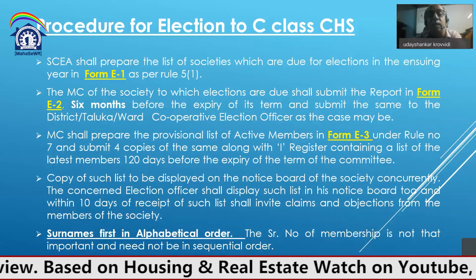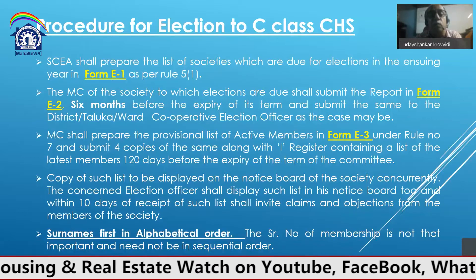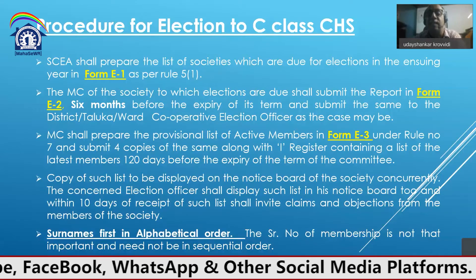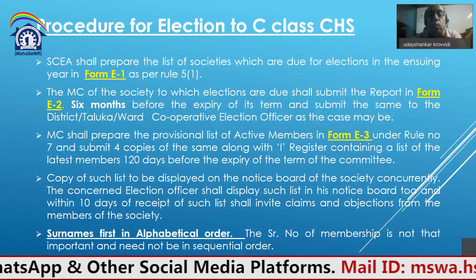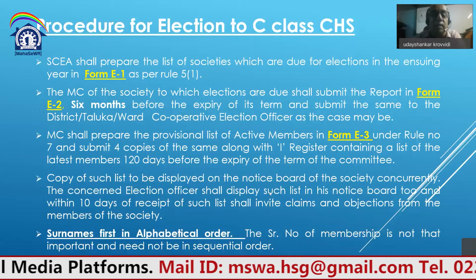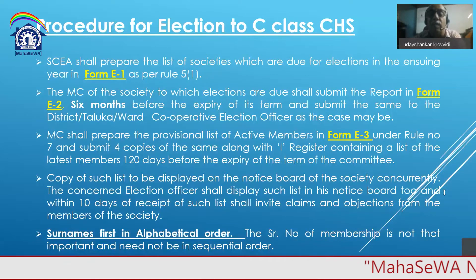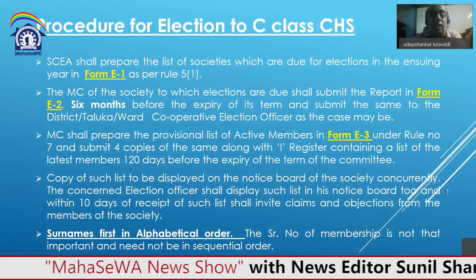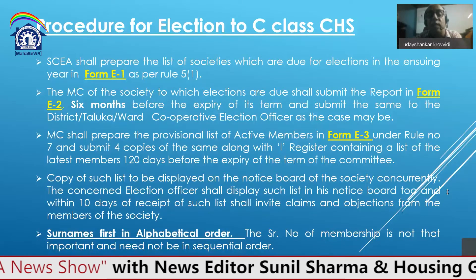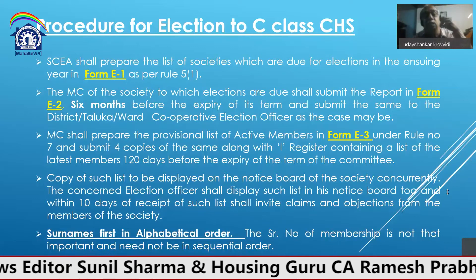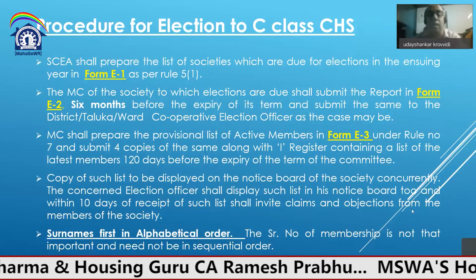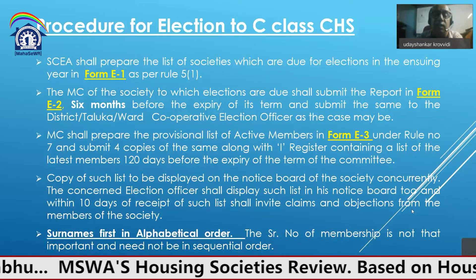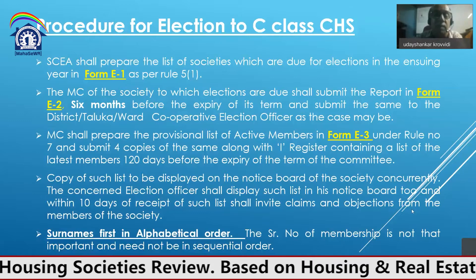The managing committee of the society for which elections are due shall submit a report in Form E2, six months before the expiry of its term, to the district or taluka cooperative election officer as the case may be. The managing committee shall prepare the provisional list of active members in Form E3 under Rule 7, and submit four copies along with the I register — containing the latest members list — 120 days before the expiry of the committee's term. A copy of such list is to be displayed on the notice board of the society concurrently.